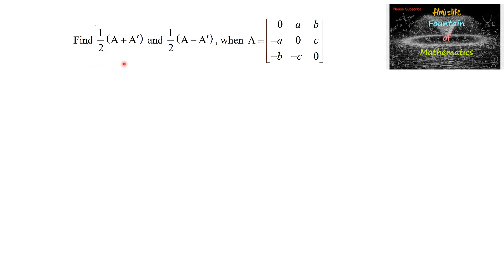Find (1/2)(A + Aᵀ) and (1/2)(A - Aᵀ), where A is equal to the 3×3 matrix with entries: 0, A, B in the first row; negative A, 0, C in the second row; and negative B, negative C, 0 in the third row.